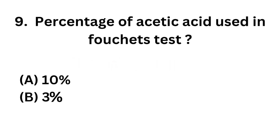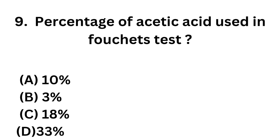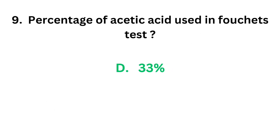Question number nine: percentage of acetic acid used in Fouchet's test — option A: 10 percentage, option B: 3 percentage, option C: 18 percentage, option D: 33 percentage. Fouchet's test is used for the detection of bile pigments, and the concentration of acetic acid used is 33 percentage. In heat and acetic acid test, it is 3 percentage.